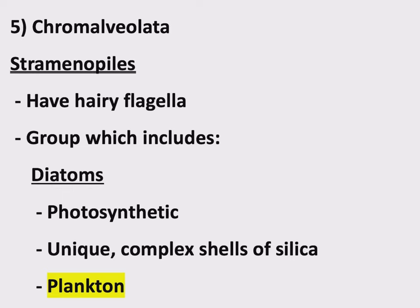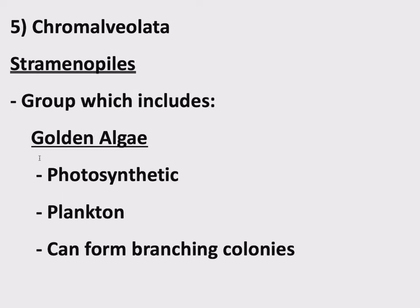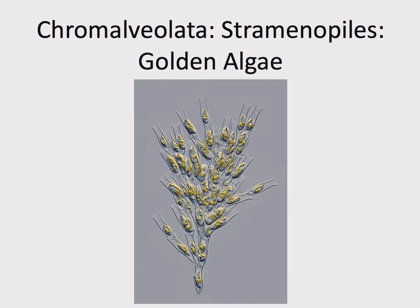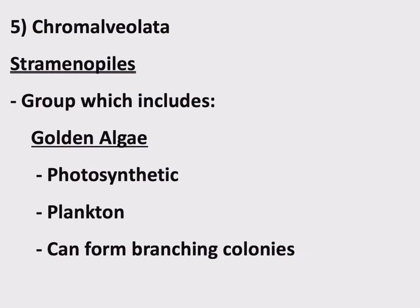Another group of straminopiles is golden algae. This is another photosynthetic plankton. Instead of having shells, what's special about the golden algae is that they can form branching colonies. This isn't really a multicellular organism — it's a bunch of cells growing together to form a colony. Diatoms are completely single-celled; golden algae, photosynthetic plankton, form branching colonies.